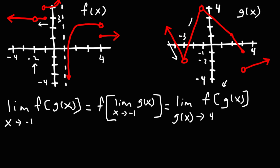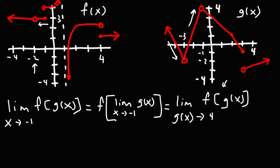Now, as we approach an x value of negative 1 and the y value approaches 4, is g going to 4 from the left or from the right? In the last problem we were approaching negative 2 from above — because we're looking at the y values, not the x values. Here, we're approaching the y value of 4 from below. When you approach a y value from above, it's associated with from the right. When you approach a y value from below, it's associated with from the left. So because we're approaching the y value of 4 from below, g is going to approach 4 from the left side.